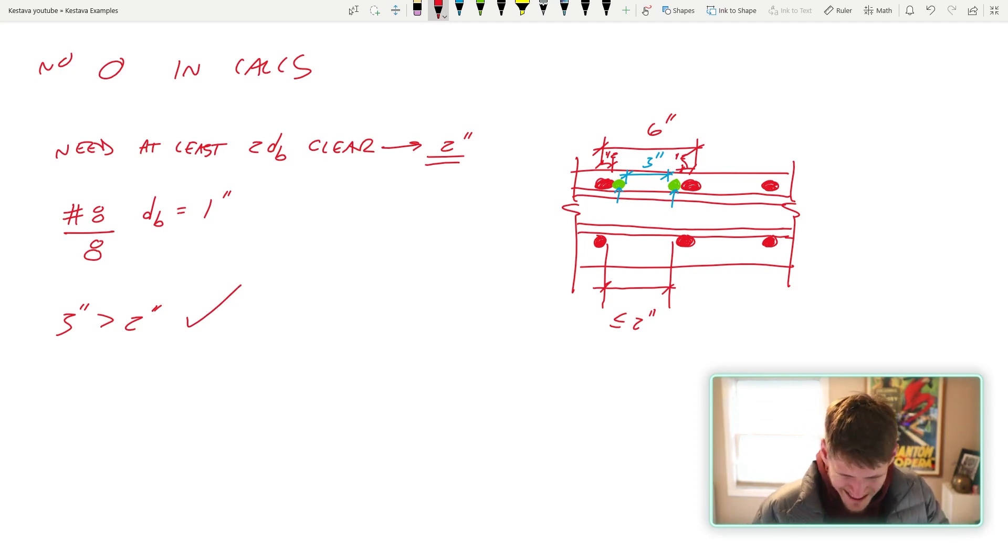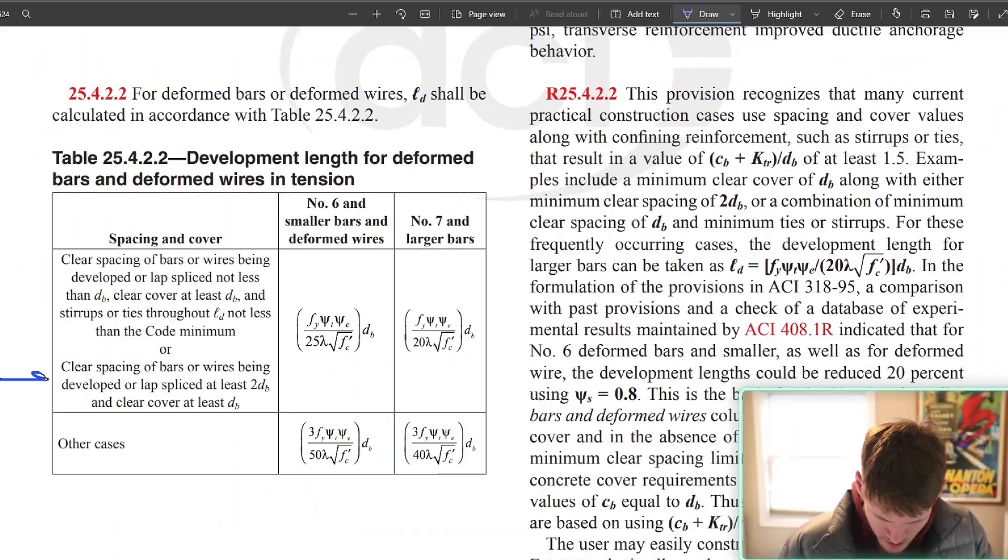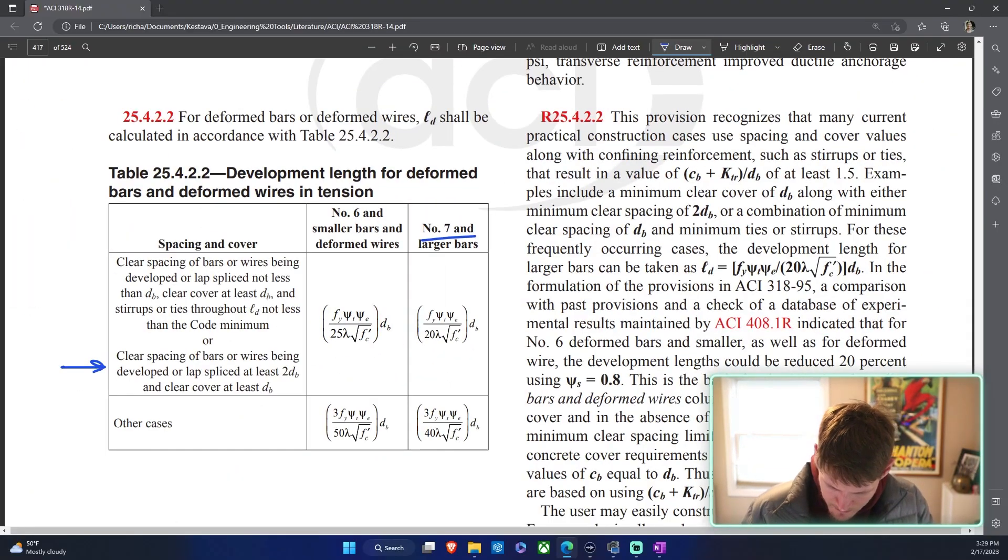So we're good there. And then the other criteria, I believe, was we needed a clear cover of at least diameter of bar, which we know in this case is one inch. We know that we're going to have at least one inch of clear cover, so I'm confident to move on and say we meet that criteria. Since this is a retaining wall structure, I think I would do two inches if I remember the clear cover requirements for retained earth. So we meet this criteria.